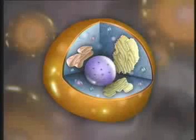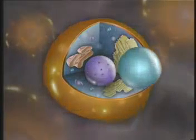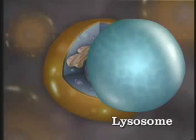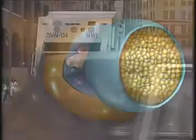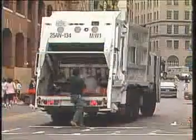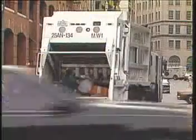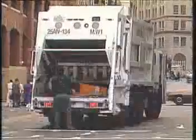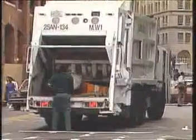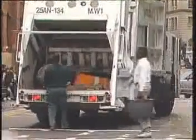Before particles of food can be burned in mitochondria, they are first processed by other organelles called lysosomes. These contain chemicals called enzymes that digest small food particles that have passed into the cell. Lysosomes are also the garbage disposal units of the cell — they break down worn out cell parts and gather waste products from the cell's cytoplasm.